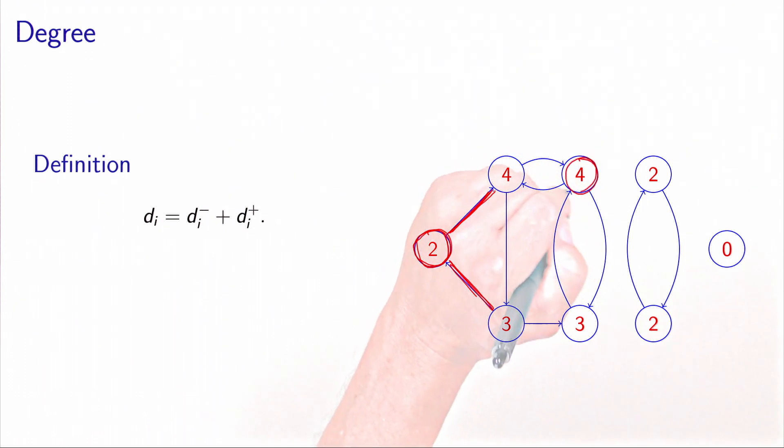This node has a degree of 4 because there are four arcs incident to it. This node has a degree of 0 because no arc is incident to it. You can verify that the other nodes have a degree reported in the circle on this example.